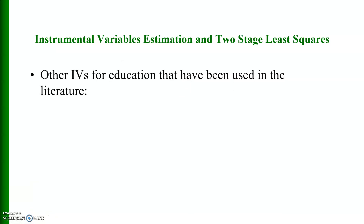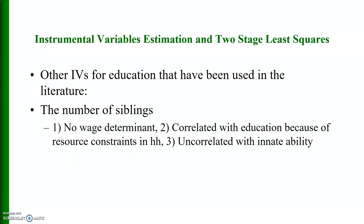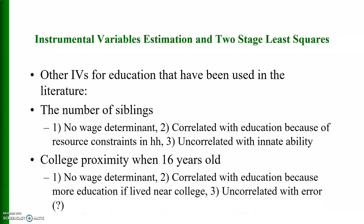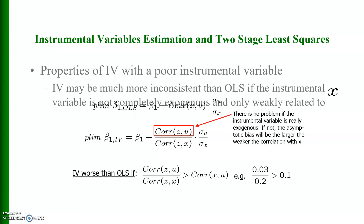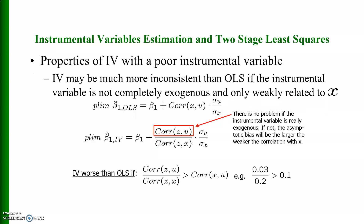Other instrumental variables for education used in the literature include the number of siblings — they do not determine wage, are correlated with education because of resource constraints in the household, and are uncorrelated with innate ability. Similarly, college proximity at age 16 can be used as an instrumental variable: it is not a wage determinant, is correlated with education because more education results from living near a college, and is uncorrelated with the error term.